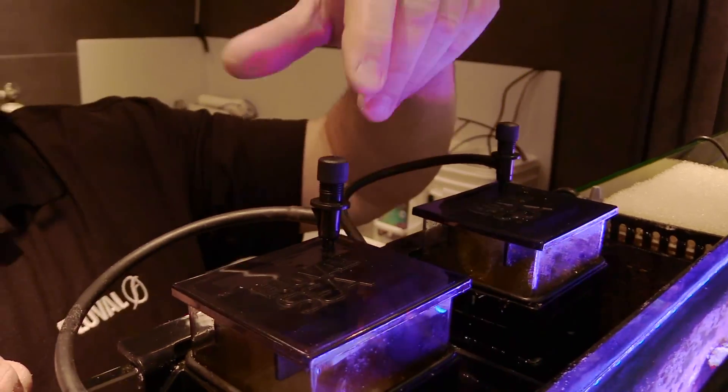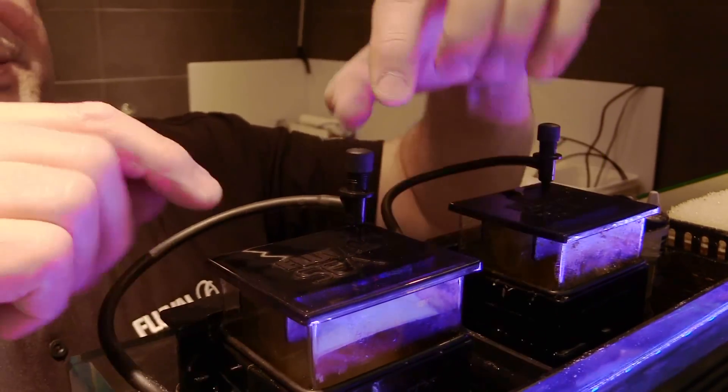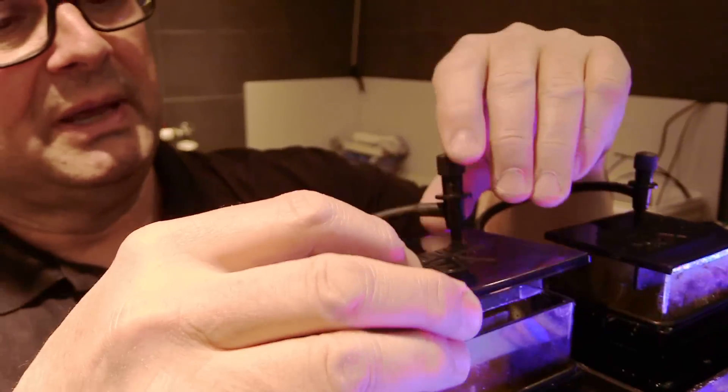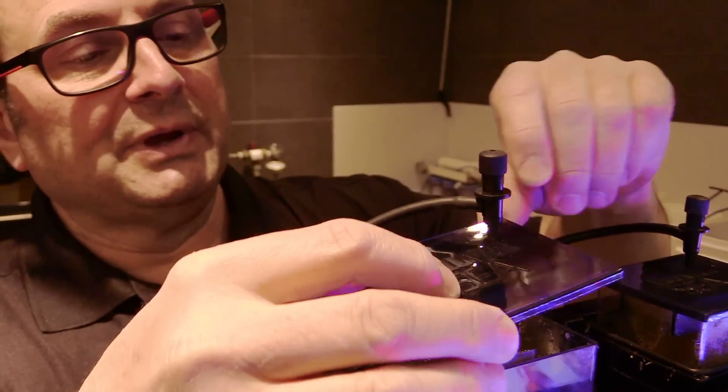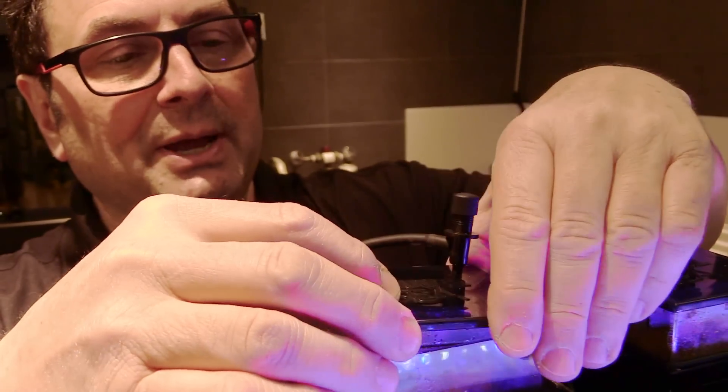What is important is that you want this valve inserted in the skimmer collection cup cover right over here. That shouldn't be left dangling outside—it needs to be inserted into the actual collection cup cover.